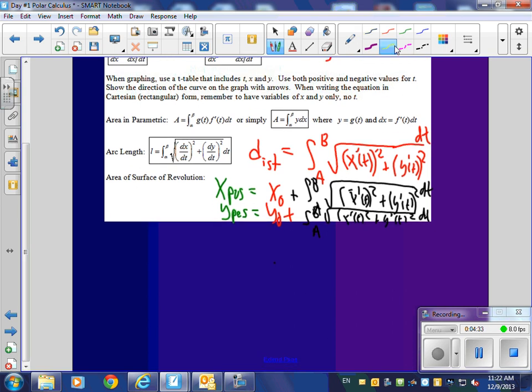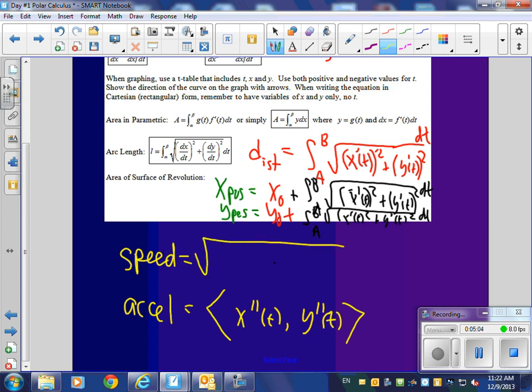The other thing I wanted to show you is sometimes they're going to ask you for the speed and the acceleration using x of t and y of t. And all you have to do for that acceleration is x double prime of t and y double prime of t. And in BC Calc, they call this the acceleration vector, but this is how you find it. And speed isn't a vector, it's a magnitude, it's just going to be the square root of x prime squared plus y prime of t squared. That's your speed.